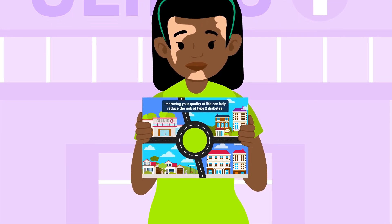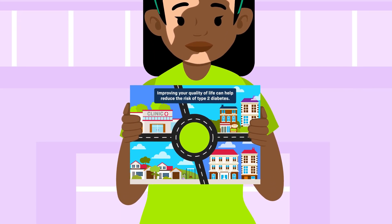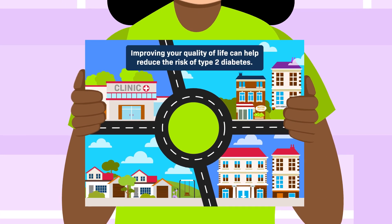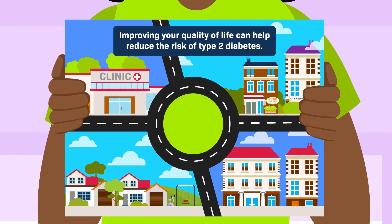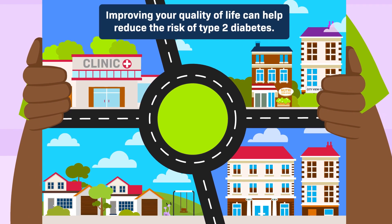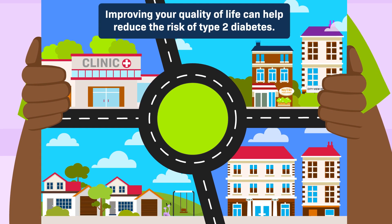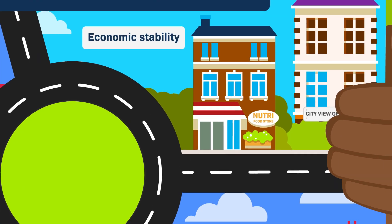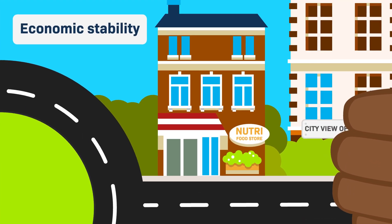These social factors are called social determinants of health. Let's have a look at how negative social determinants of health can have a cumulative effect, influencing the development of type 2 diabetes.